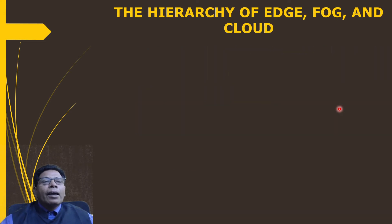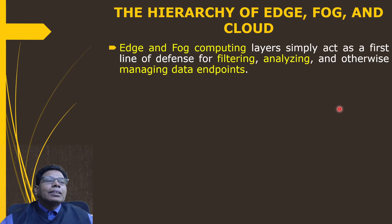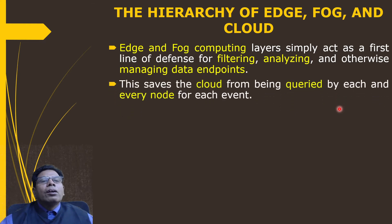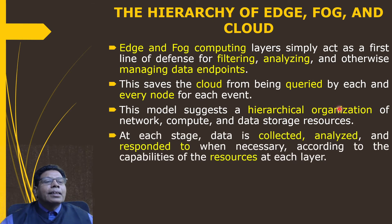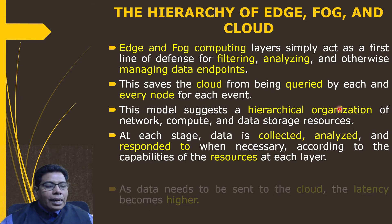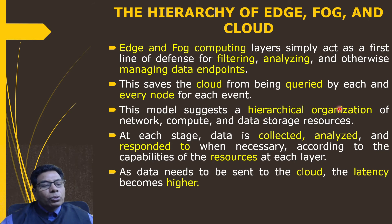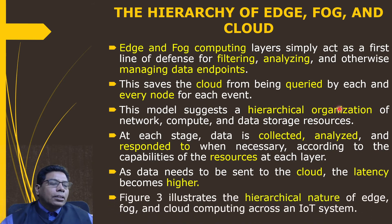In the hierarchy of edge, fog, and cloud: edge devices simply act as the first line of defense for filtering, analyzing, and otherwise managing data at the endpoints. This saves the cloud from being queried for each and every event, reducing traffic to the cloud. This model suggests a hierarchical organization of network compute and data storage resources. At each stage, data is collected, analyzed, and responded to according to the capabilities of the resources at that layer. As data needs to be sent to the cloud, latency becomes higher — highest near the cloud, lowest at the edge.